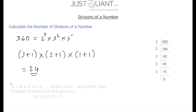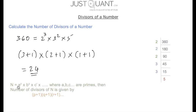In general, if n is a composite number which is expressed as a to the power of p into b to the power of q into c to the power of r, and so on, where a, b, c are primes, then the number of divisors of n is given by p plus 1 into q plus 1 into r plus 1, and so on. So we know how to calculate the number of divisors of a number.